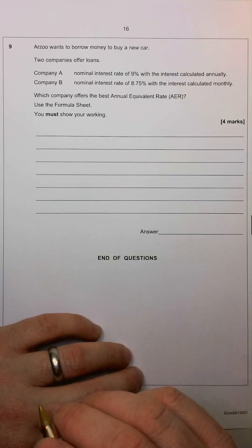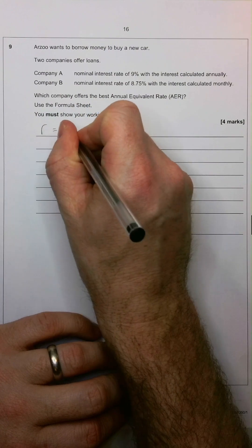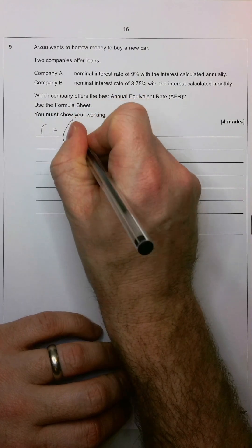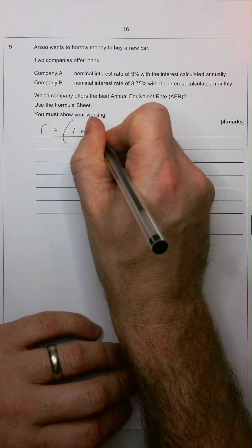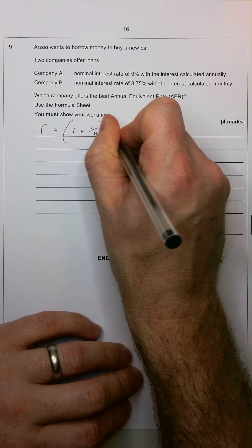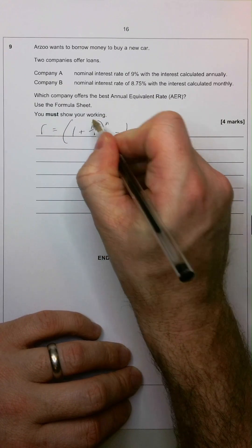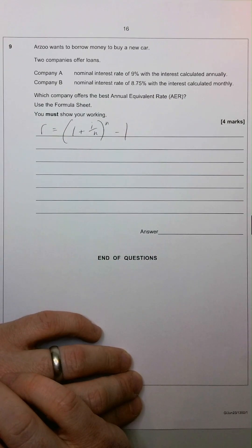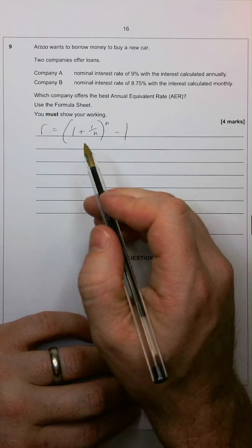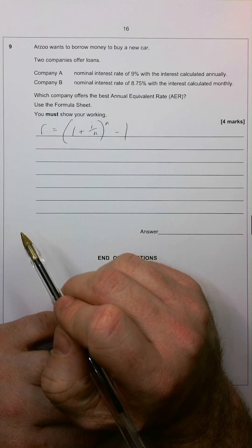The formula for working out AER is R equals 1 plus i over n to the power of n minus 1. This is where i is the interest rate expressed as a fraction or a decimal, and n is the number of times the interest is calculated.